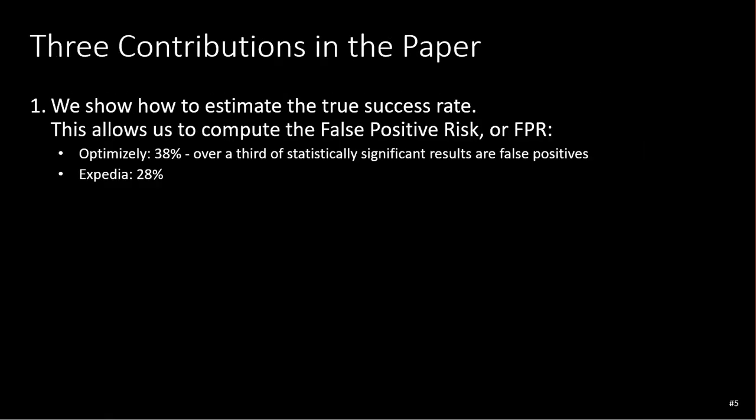There are three contributions we make in the paper. We show how to estimate the true success rate, which allows us to compute the false positive risk that we want. We estimate that Optimizely has a 38% false positive risk — meaning a third of the results are false.